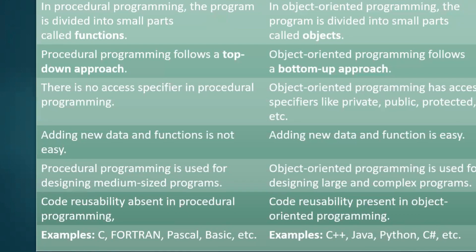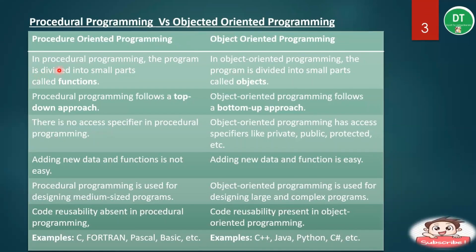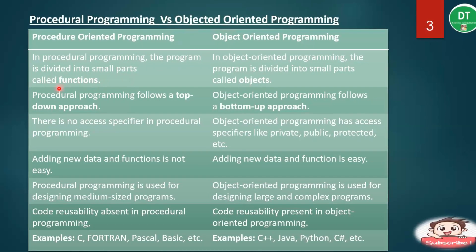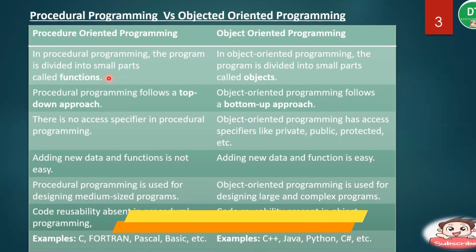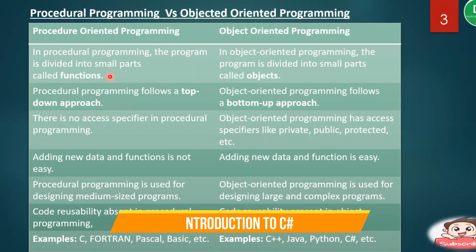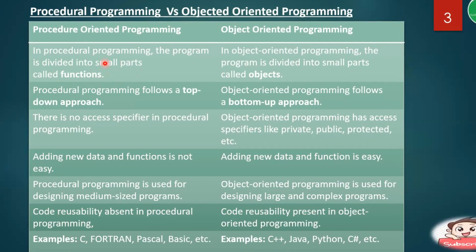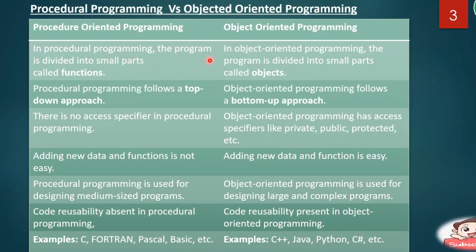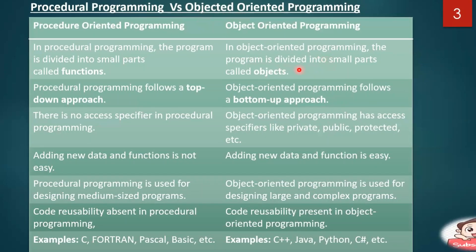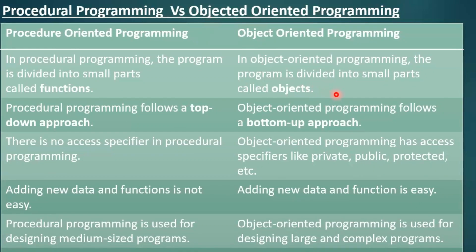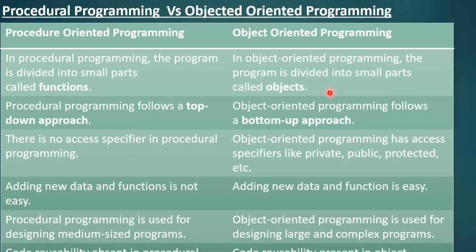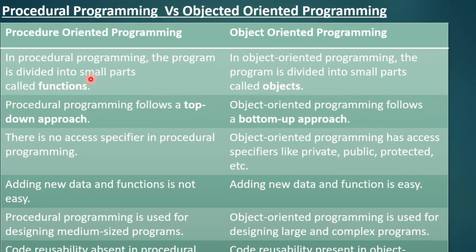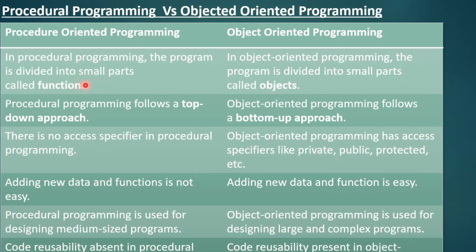Now we'll see the difference between procedural programming and object-oriented programming. In procedural programming, the program is divided into small parts called functions, also called procedures. A program which is dependent on procedures or functions is called procedure-oriented programming. In object-oriented programming, the program is divided into small parts called objects. In C#.NET, we create classes and by using the classes we create objects — object is the main entity, whereas in procedural programming, the function or procedure is the main entity.